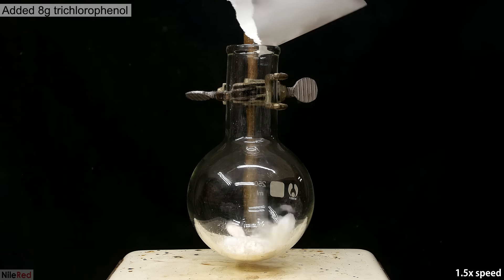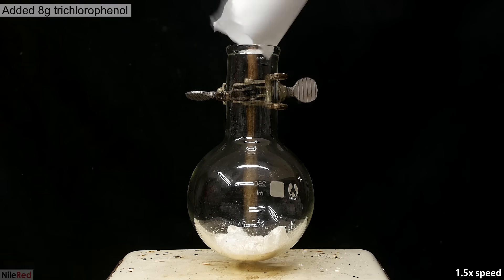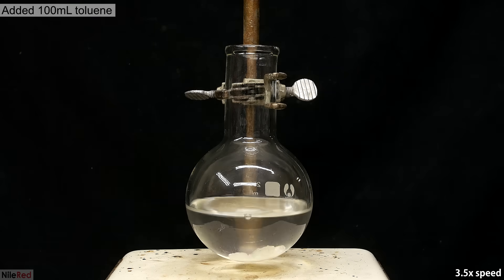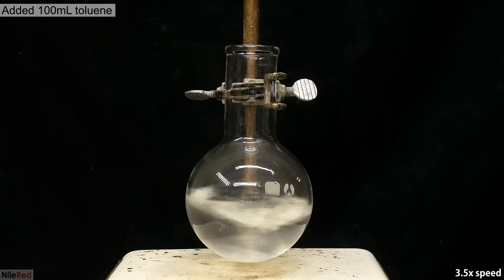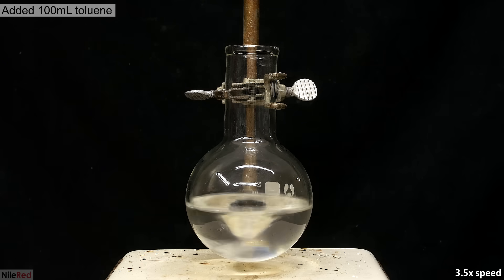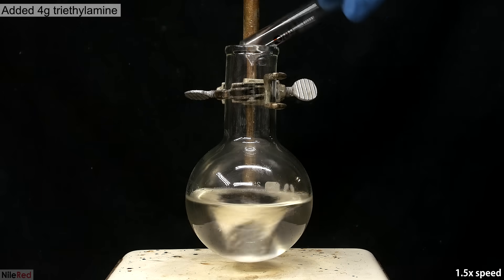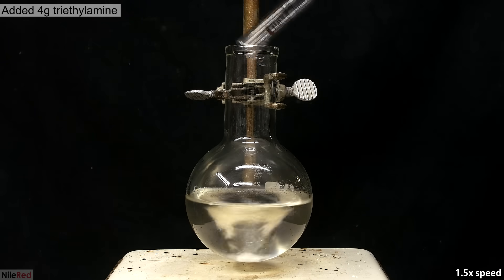Okay, so to start things off, I add 8 grams of trichlorophenol. I pour in about 100 milliliters of toluene, and I turn on the stirring. When everything dissolves, I add 4 grams of nice and stinky triethylamine.